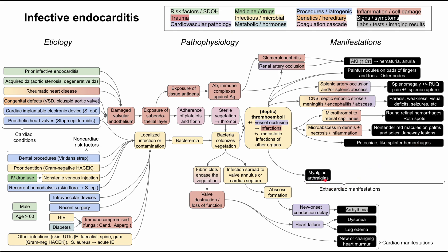An earlier, sometimes nonspecific symptom is myalgias and arthralgias — general muscle pain and joint pain, thought to result from thromboemboli thrown throughout the body. All of these systemic manifestations arise from left-sided endocarditis, since the left heart provides blood to the systemic circulation. This is in contrast to the right heart, which provides blood to the pulmonary circulation. With right heart infection — typically the tricuspid valve — you get pulmonary problems. IV drug use is a common cause, since injected bacteria first encounter the tricuspid valve through the venous system.